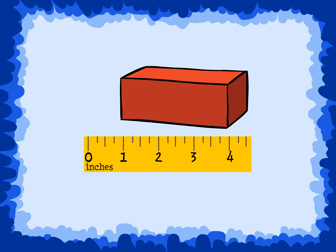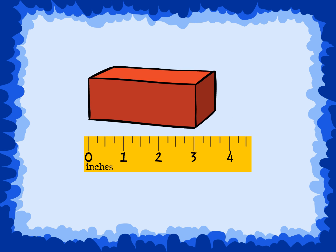Look at these examples. This is not the correct way to measure the block — notice the placement of the block. The edge of the block is not lined up with the end of the ruler, and the measurement shows about 4 inches. Now look at this picture. This is the correct way to measure the block. The edge of the block is lined up with the end of the ruler, and the true measurement of the block is about 3 inches.